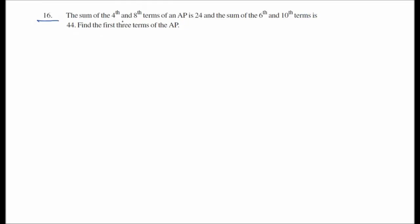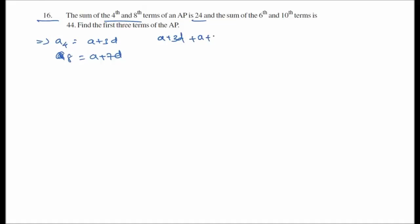Question 16: The sum of the 4th and 8th terms of an AP is 24. The 4th term is a plus 3d and the 8th term is a plus 7d. Adding: 2a plus 10d equals 24, which simplifies to a plus 5d equals 12. This is equation 1.